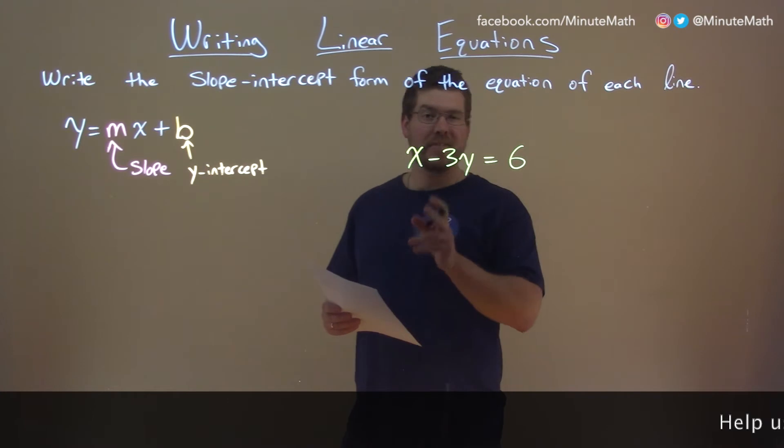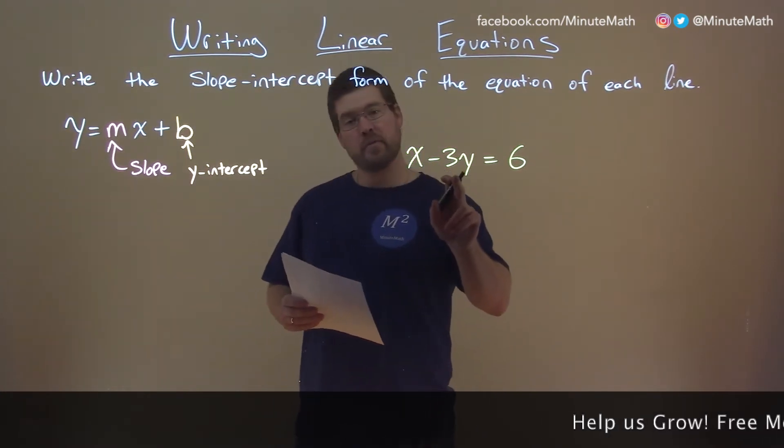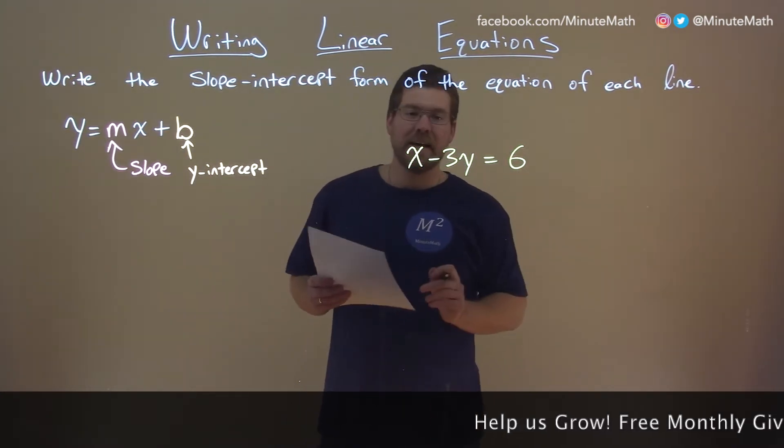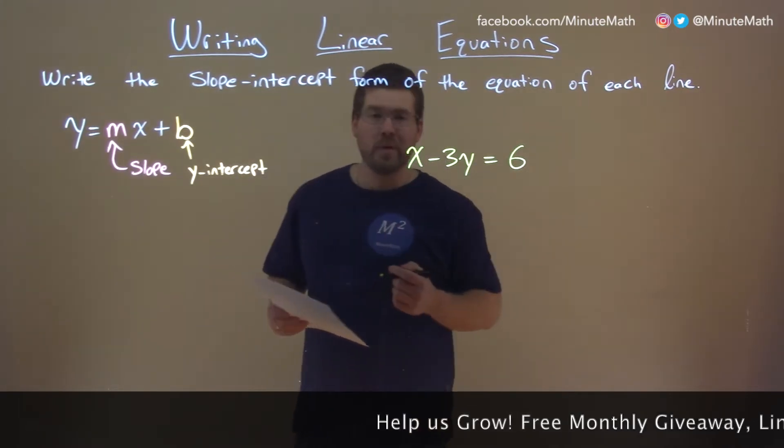So if I was given this equation, x minus 3y equals 6, and I want to write that in slope-intercept form.